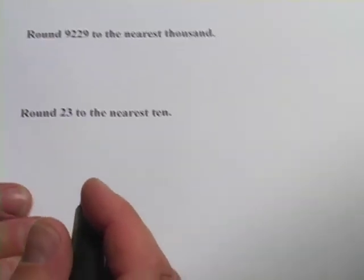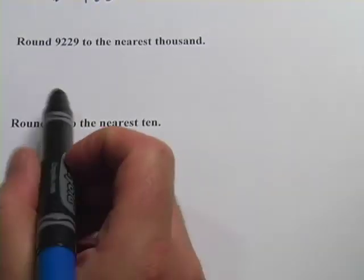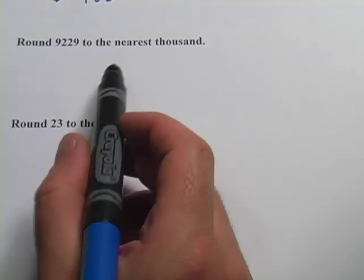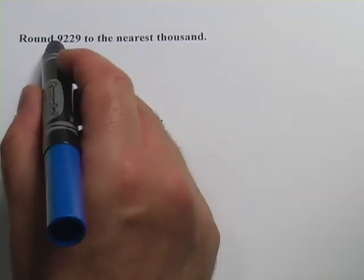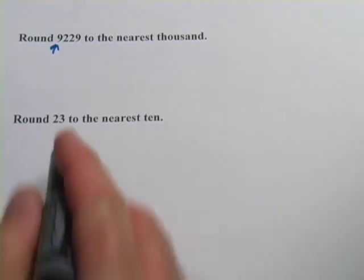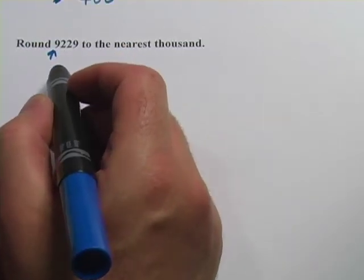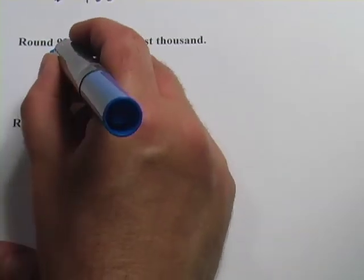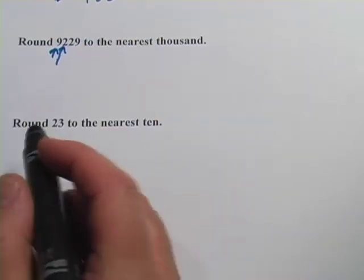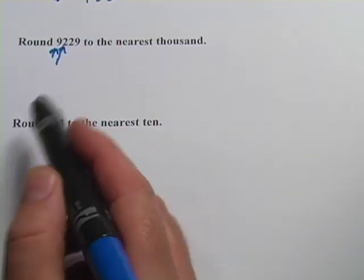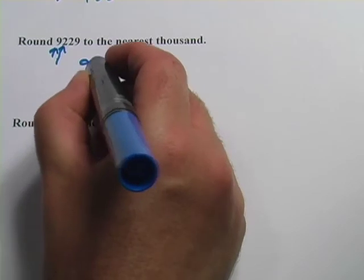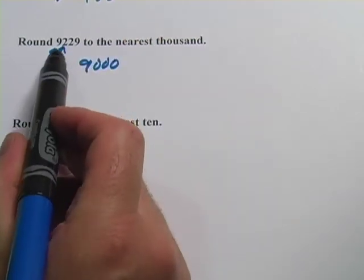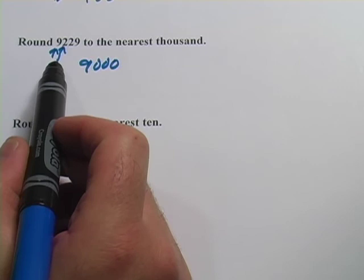Let's look at the next one. It says round 9,229 to the nearest thousand. So here are the thousands, we've got 9,000 something here, and the question is, do we round up or down? So we look at the next number right there, that's a 2, that's less than 5, so we round down to 9,000. If it was 5 or greater, we would have rounded up to 10,000.